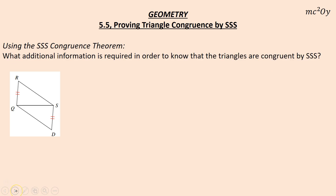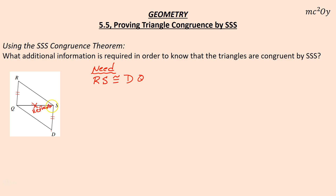Using side-side-side congruence, what additional information is required to know that the two triangles are congruent? I look at the figure and can see I'm given one side congruent to another. I can also get the reflexive property. However, I don't have a third side. In order to prove these two triangles congruent, I'd need to know that RS is congruent to DQ. D corresponds to R — it's attached to the side with two markings. I don't know that, so I cannot prove these triangles congruent without it.